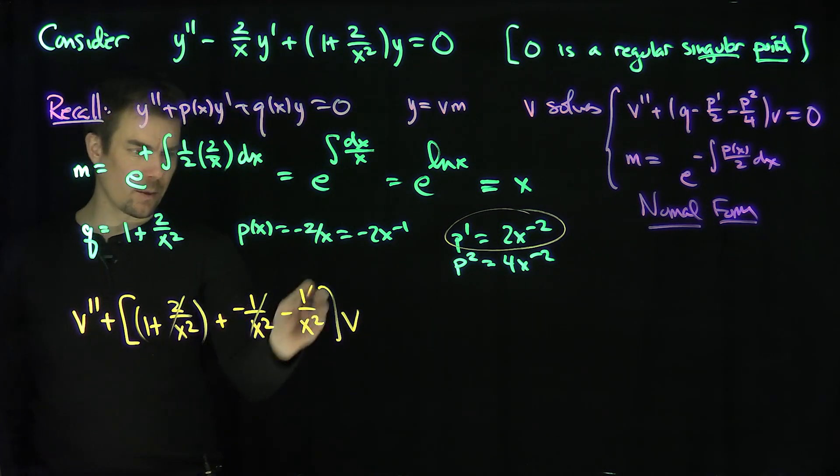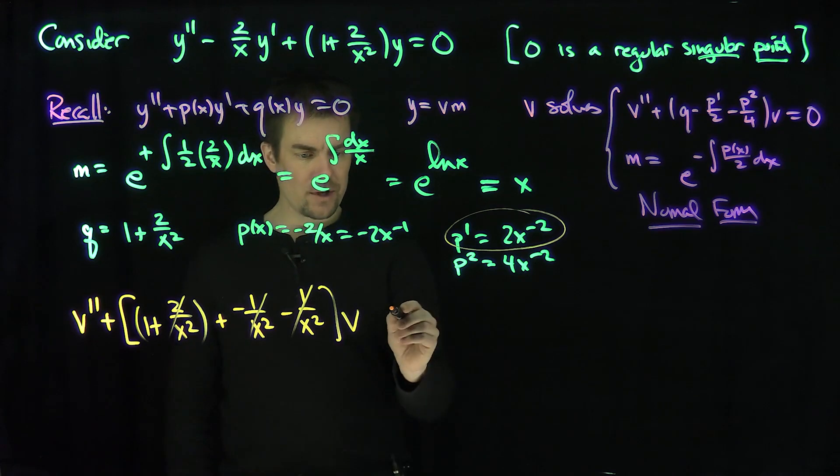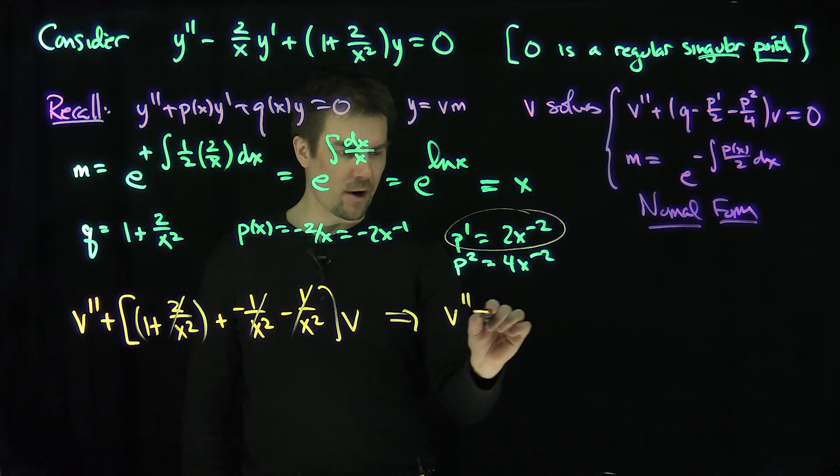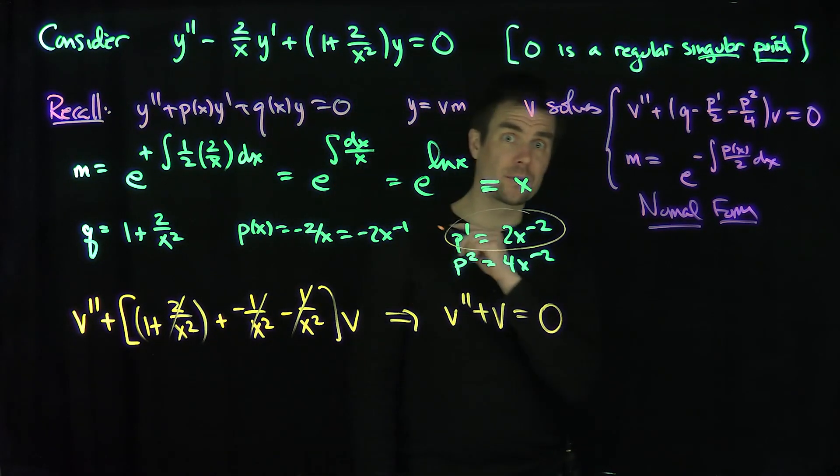And lo and behold, what happens to these x^(-2) terms? They all cancel out. So the ODE for v that we get is v'' + v = 0. That's trivial to solve.